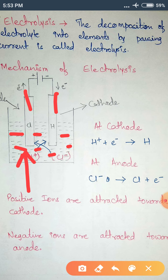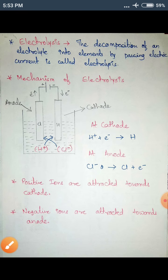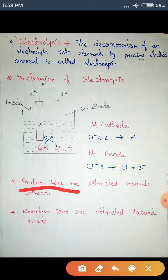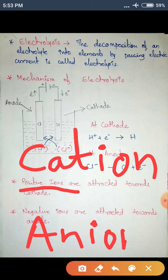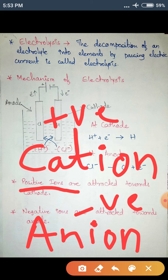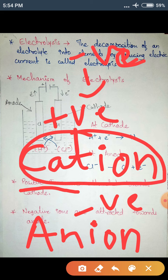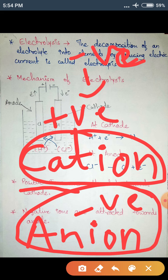I insert two electrodes into the solution. Before that, we should know some terminology. All positive ions are called cations, and they are attracted towards the cathode. All negative ions are called anions. Positive charges are attracted by negative charge, so the electrode that attracts cations is the cathode, and the electrode that attracts anions is the anode. The cathode is negatively charged and the anode is positively charged.